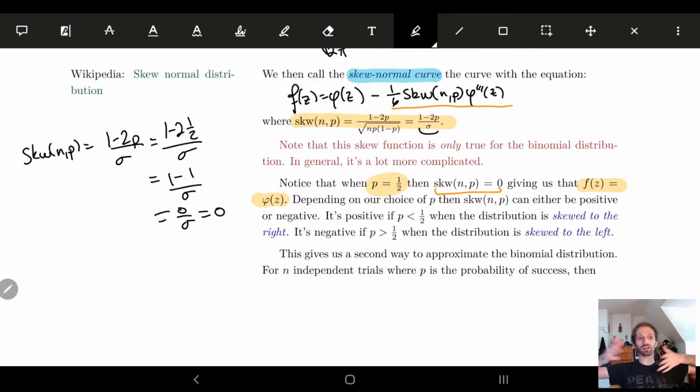Now, skew itself can be either positive or negative. It depends on what's up with our probability. And you'll notice that if p is less than 0.5, then it's going to be positive. And what we do in this case is we see that it's going to be skewed a little to the right.